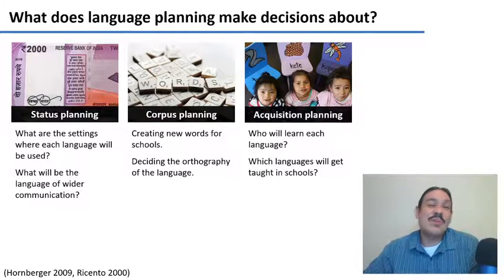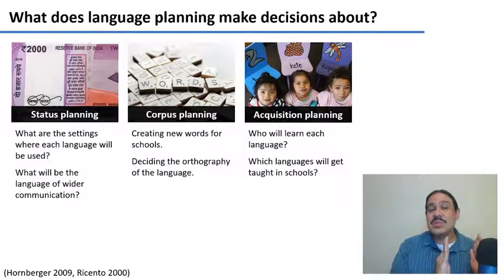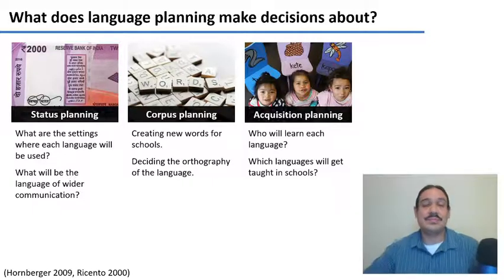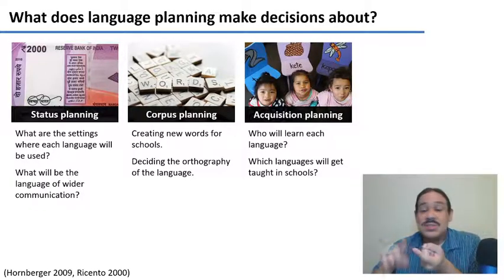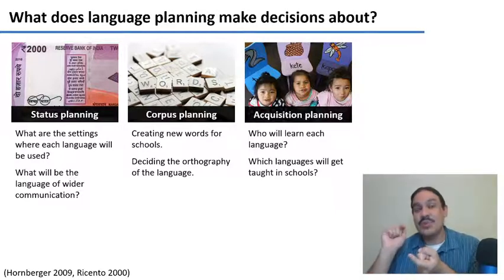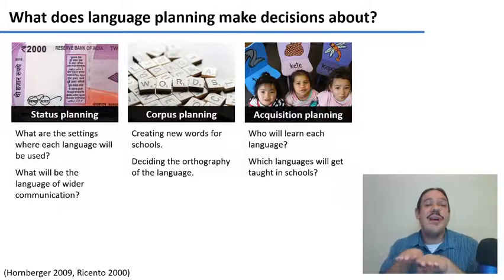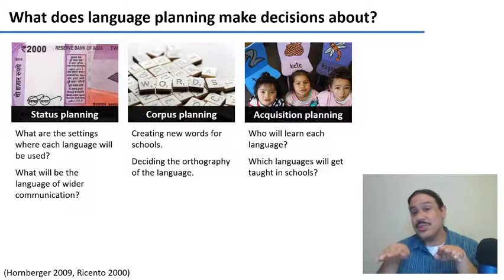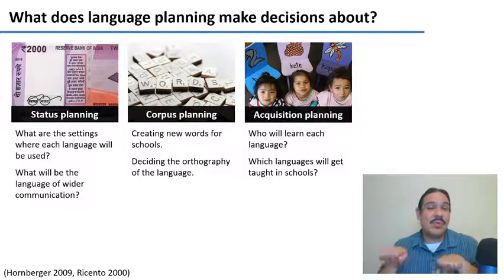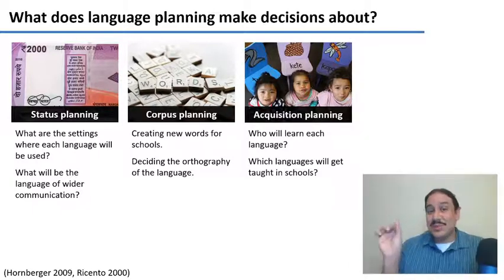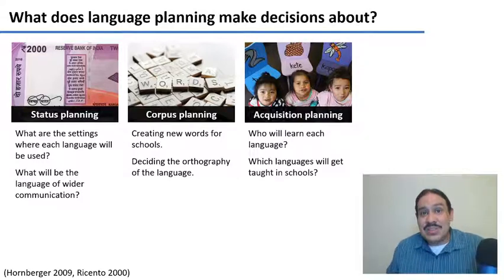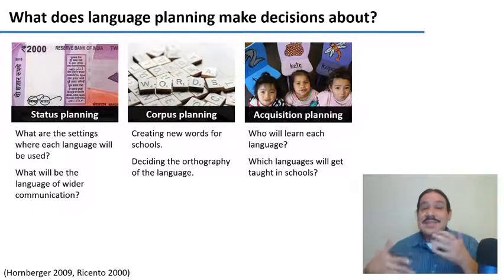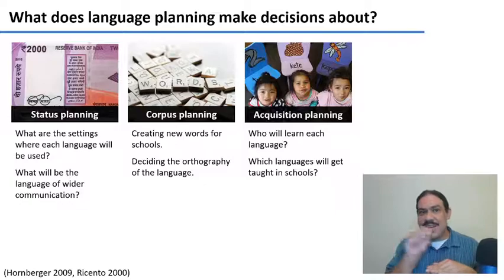You also need to decide on corpus planning. Corpus here means the collection of vocabulary that is chosen. You'll need to decide on new words for schools — for example, what is the word for chlorophyll going to be if the language doesn't have one yet? Who makes the new word — a committee, or the Ministry of Education? Who will decide on the orthography and how words should be written and taught in schools? Should they favor one dialect over another, or try to reach a neutral form usable for all dialects? These decisions also affect schools: who learns the languages, which languages get taught, and who gets to learn to read and write in their language.